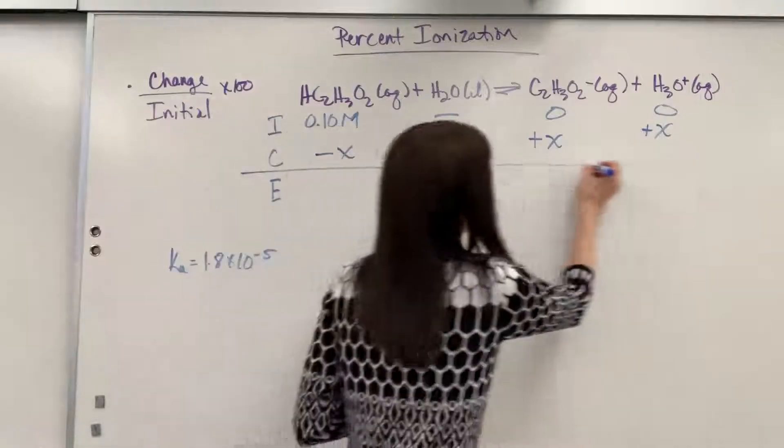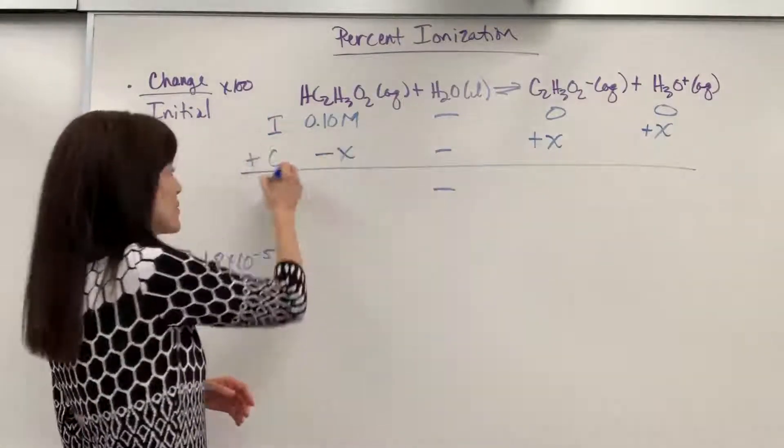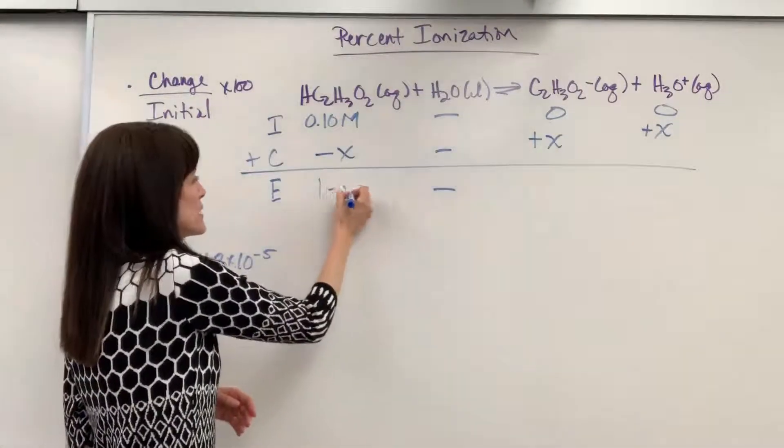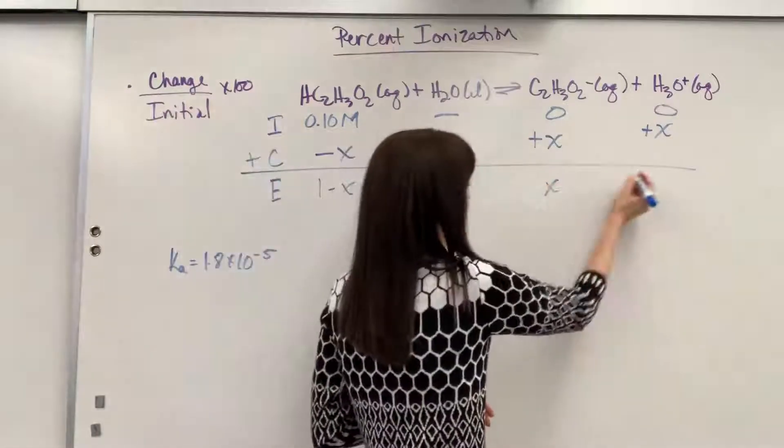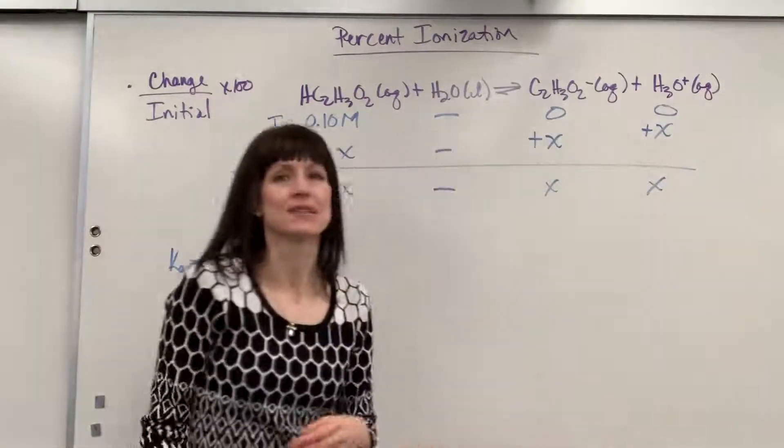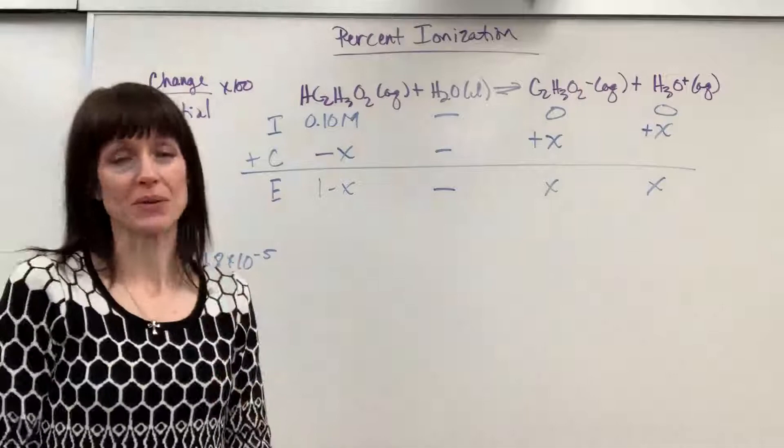Now to find our E, really easy. You just take I plus C. We get 0.1 minus x. Zero plus x is x. Zero plus x is x.